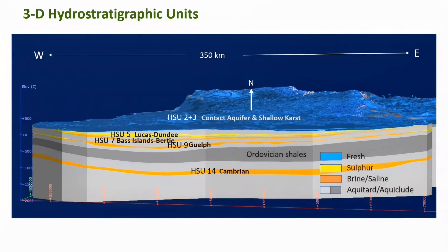This is a regional view of our 3D hydrostratigraphic model looking north from Lake Erie, tipped up to the north on its edge. The colored layers are the principal aquifers in the subsurface, color-coded by water type, and the units in gray are all the aquitards.